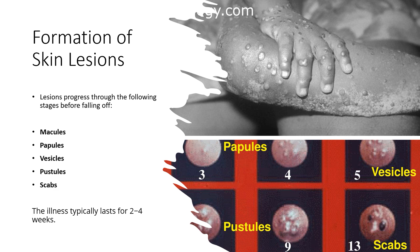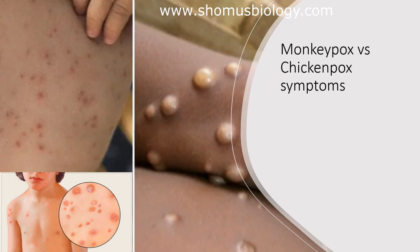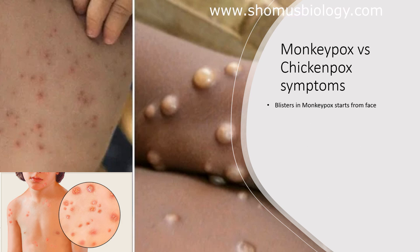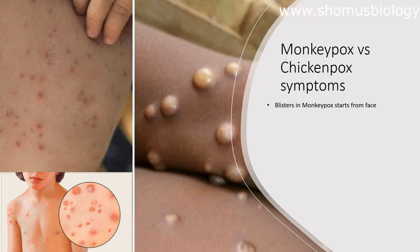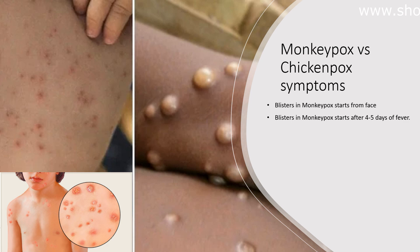It's important to distinguish between chickenpox and monkeypox. In monkeypox, blisters start on the face and then transfer to the rest of the body, whereas in chickenpox, blisters start in the chest and back and then slowly move to the face and the rest of the body. Additionally, blisters in monkeypox appear after four to five days of fever, while in chickenpox they appear one to two days after the initial onset of fever.